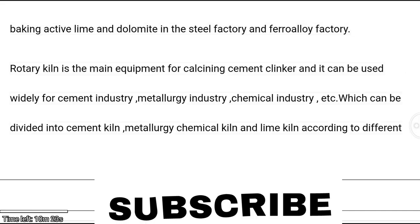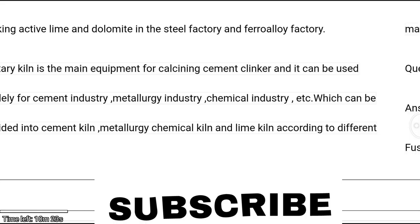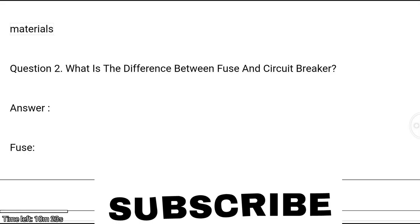Rotary kiln is the main equipment for calcining cement clinker and can be used widely in cement, metallurgy, and chemical industries. It can be divided into cement kiln, metallurgy chemical kiln, and lime kiln according to different materials. Question 2: What is the difference between a fuse and a circuit breaker?